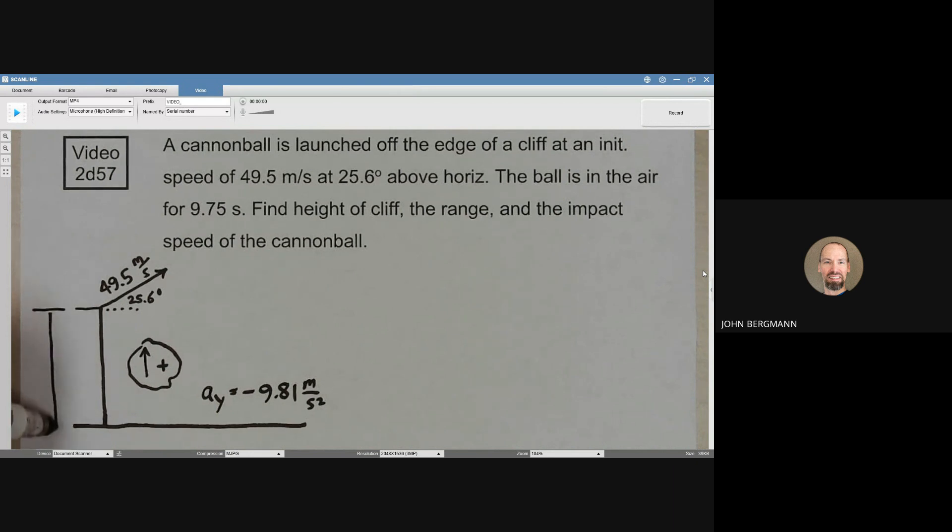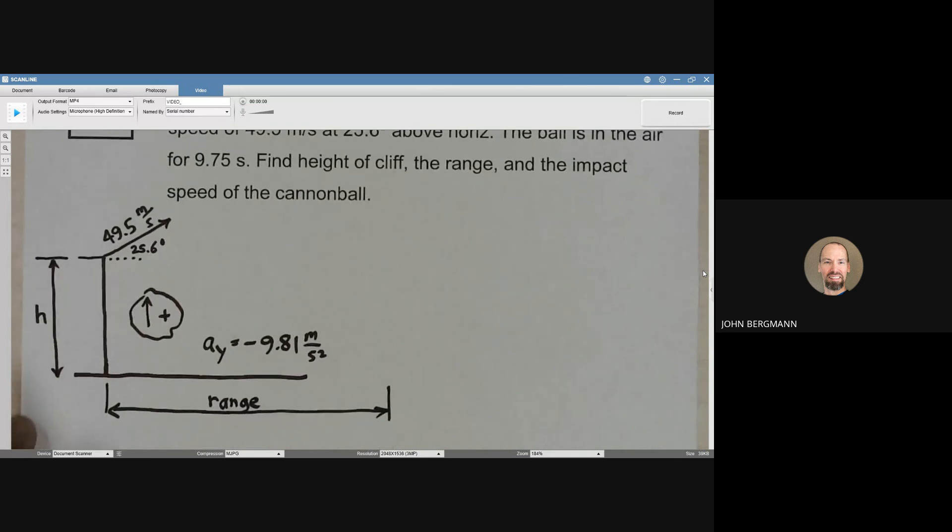One thing we want to find is the height of the cliff here, call it h. We want to find the range, which is how far it goes before it hits the ground down here, and we want to find the impact speed. Well, when you don't know what to do, do something.